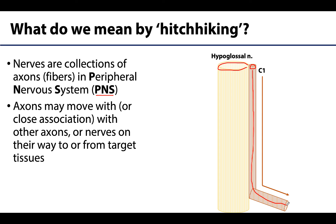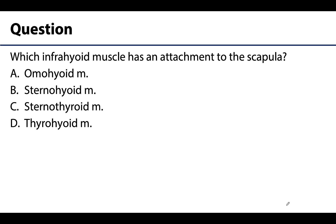Question one: which infrahyoid muscle has an attachment to the scapula? Is it A, omohyoid; B, sternohyoid; C, sternothyroid; or D, thyrohyoid? The correct answer is A, omohyoid. 'OMO' is the key — omo indicates shoulder, and the scapula is part of the shoulder joint. Recall that the infrahyoid muscles are named for their attachments, which can really help in remembering the attachments and thinking through the actions of these muscles.